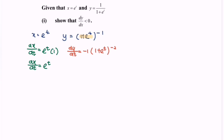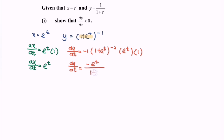Then e to the power of t, and we will have e to the power of t. Focus on the power, differentiate t with respect to t and we will have 1. Rewrite the situation. So dy/dt is equals to negative e to the power of t over 1 plus e to the power of t, bracket squared.